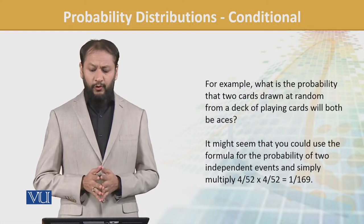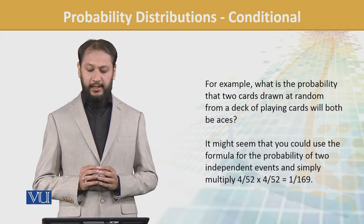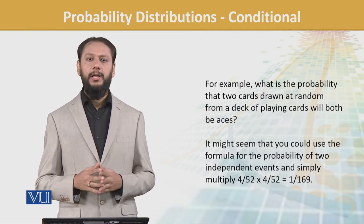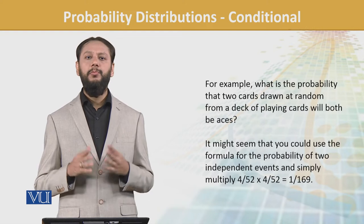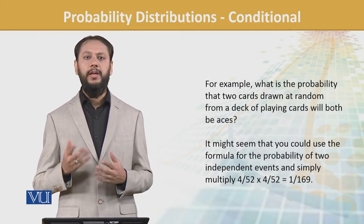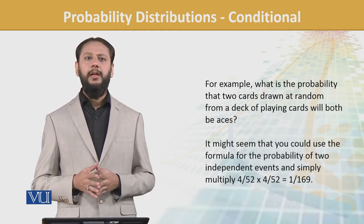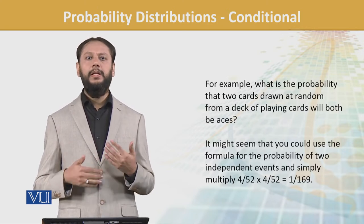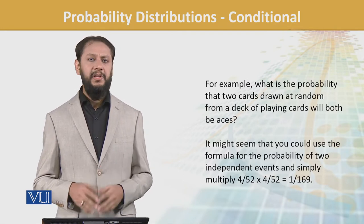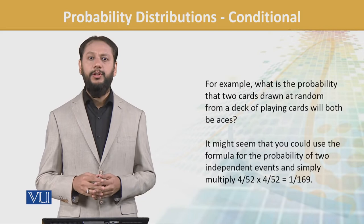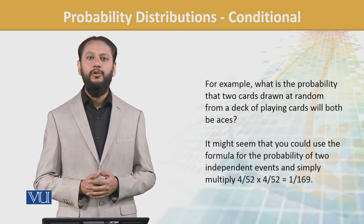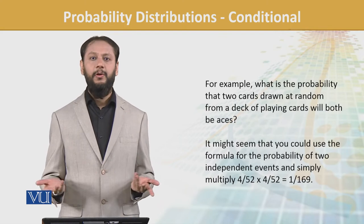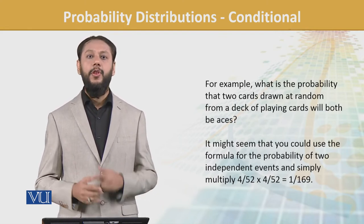For example, what is the probability that two cards drawn at random from a deck of playing cards will both be aces? In playing cards there are 52 cards and 4 aces. It might seem that you could use the formula for the probability of two independent events and simply multiply 4/52 × 4/52 = 1/169. No, wrong.